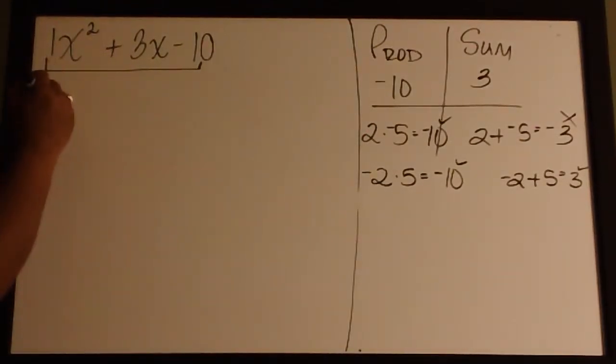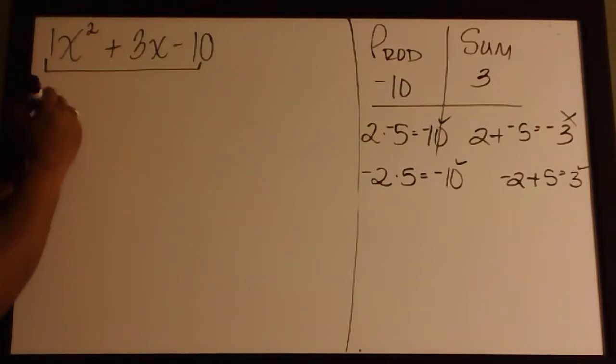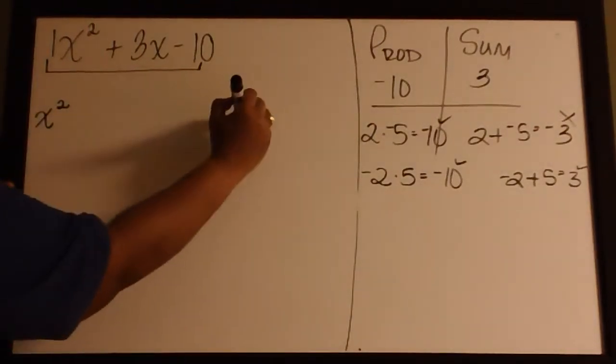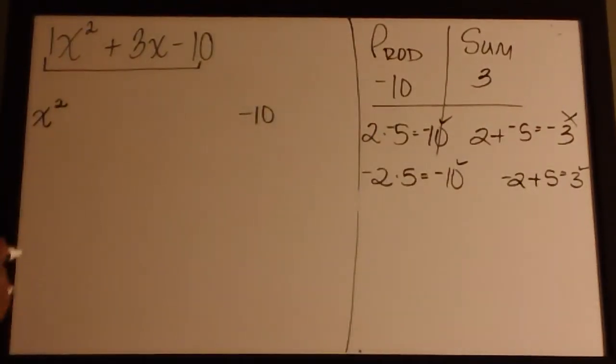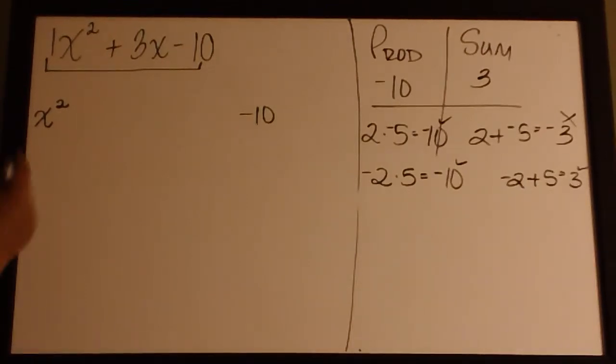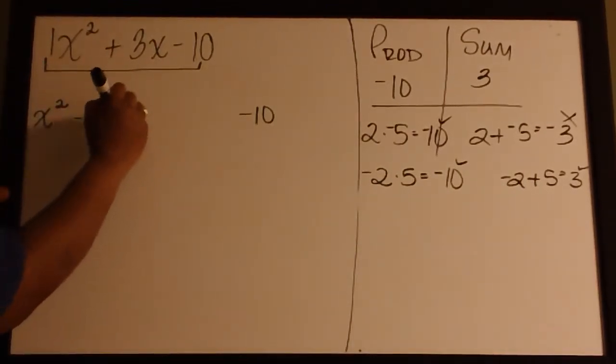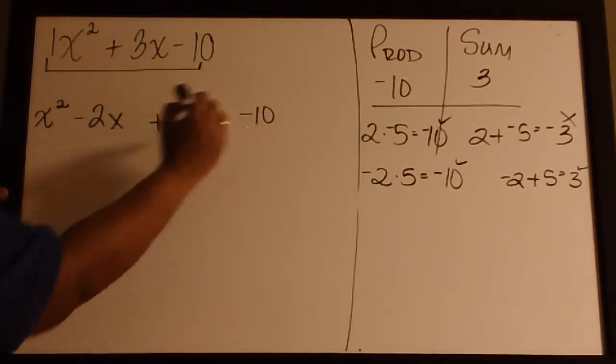So I will bring down the ends: x squared and negative 10. And I will fill in the middle with negative 2x and positive 5x.